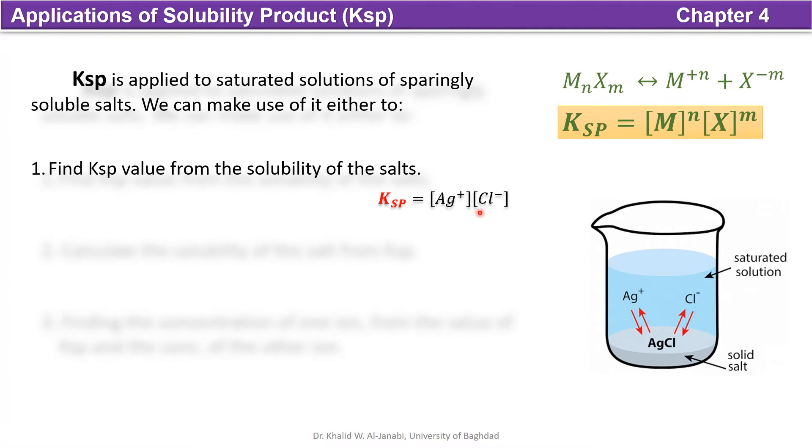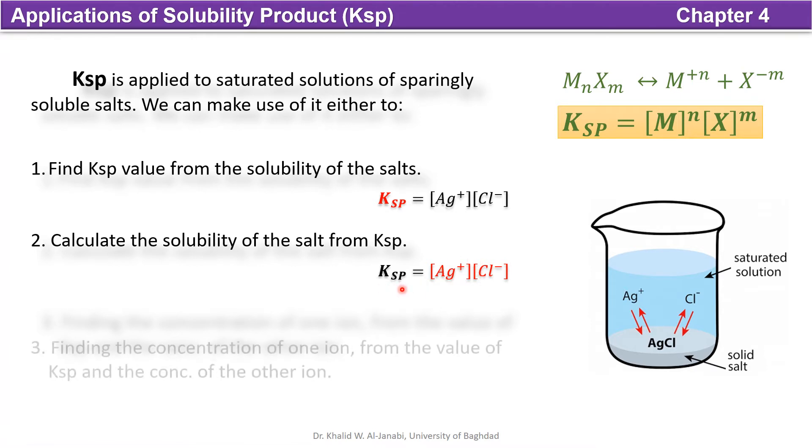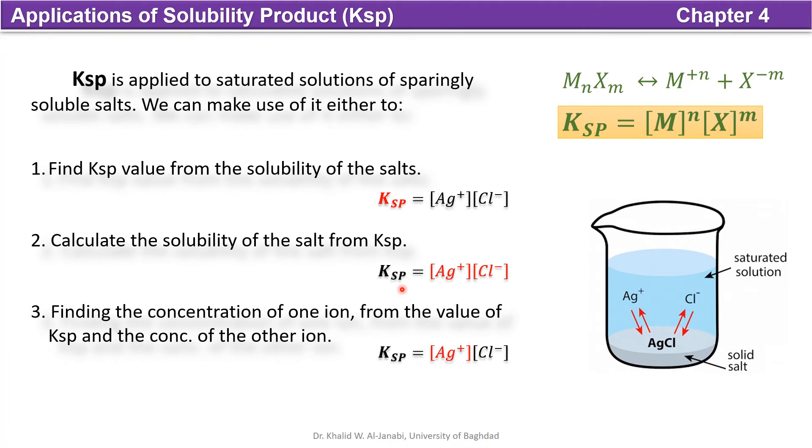Or calculate the solubility of the salt from the value of Ksp. And the third use is to find the concentration of one ion from the value of Ksp and the concentration of the other ion in the solution.